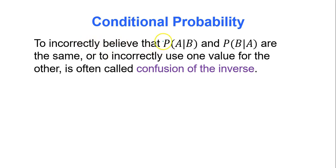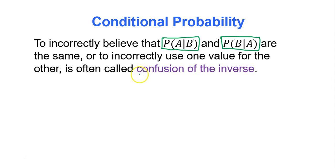There is a difference between calculating the probability of A occurring given that B occurred and finding the probability that B occurs given that A has occurred. They're both two separate events, so the order does make a difference. Incorrectly mixing these up is called confusion of the inverse — I just wanted to point out that there is a difference.